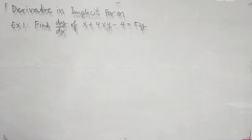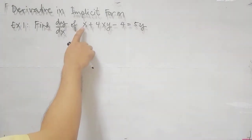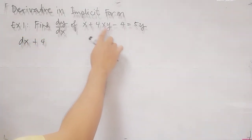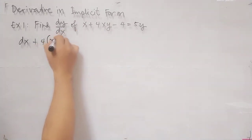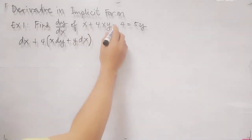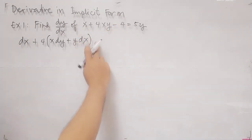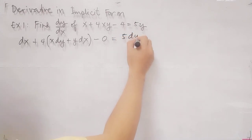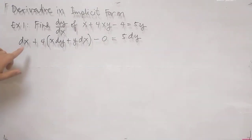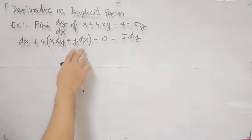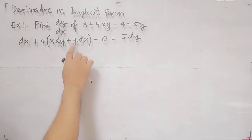When we find the derivative, we apply d to each term. The derivative of x is dx. For 4xy, this is a product rule, so we write x dy plus y dx. The derivative of the constant 4 is 0. On the right side, the derivative of 5y is 5 dy. Take note: every term must have d — dx for x terms, dy for y terms.